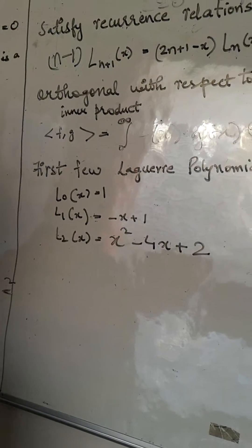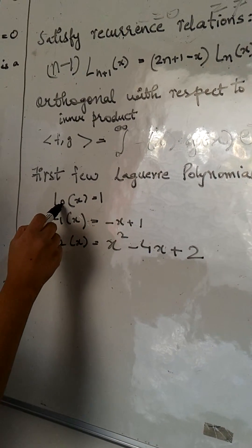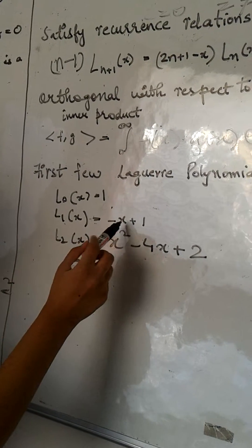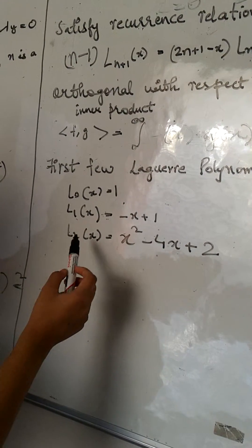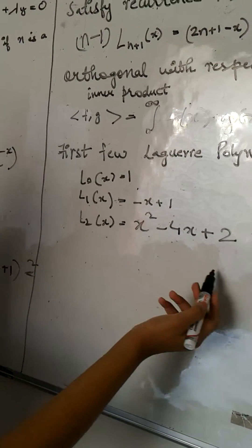Coming on to first few Laguerre polynomials, they are given by: n=0, L(x)=1; n=1, L(x)=-x+1; for n=2, L(x)=x²-4x+2.